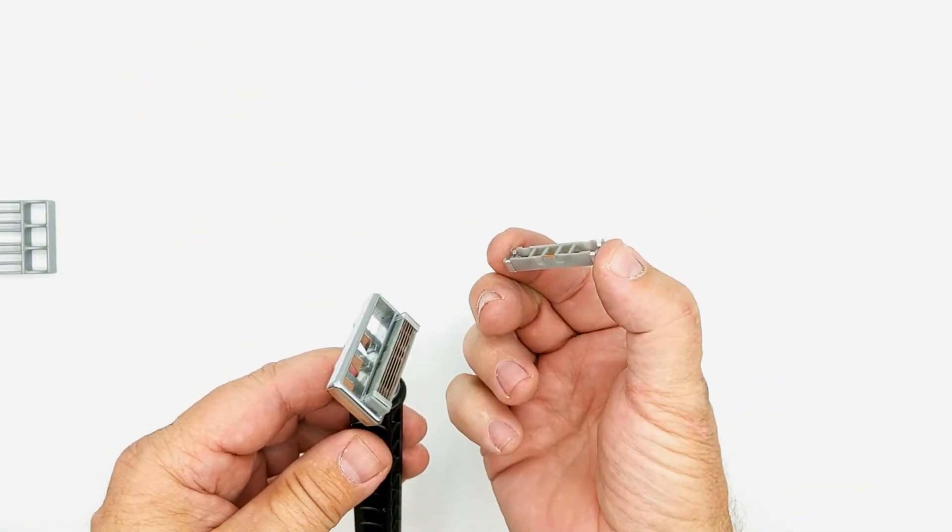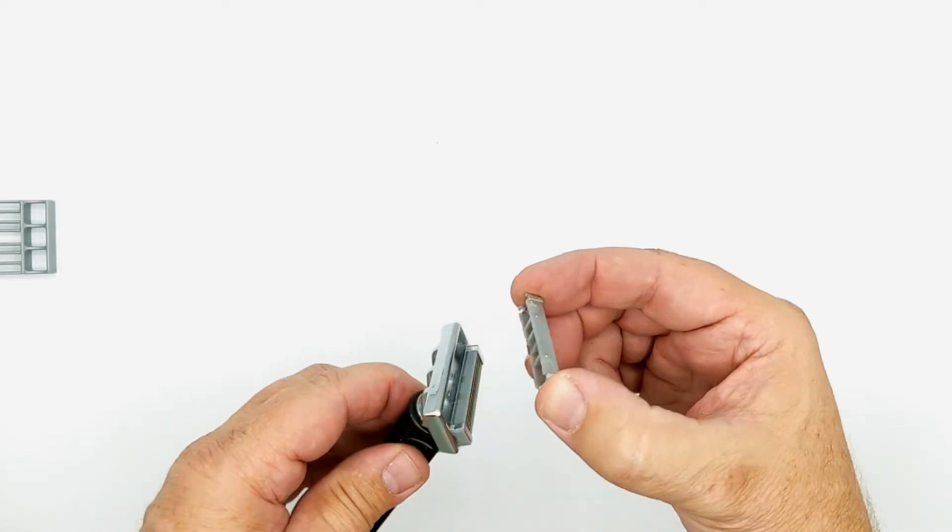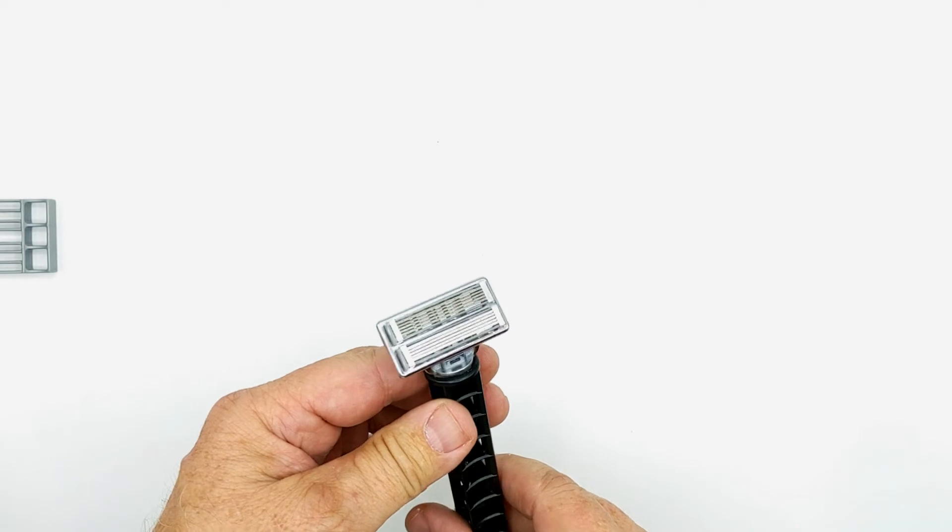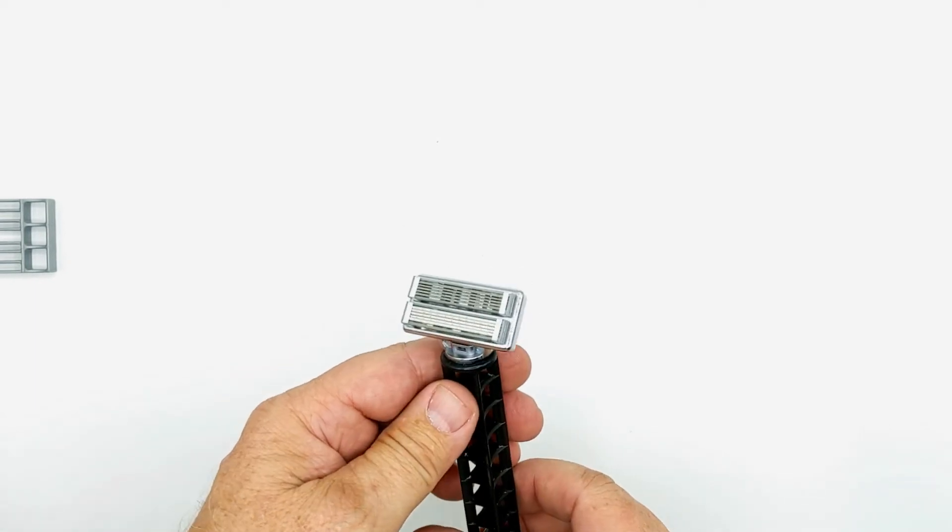You'll take the other cartridge and the orange dot again is towards the center of the shaving head and you'll gently push it in so they're not pushed in any farther than this.